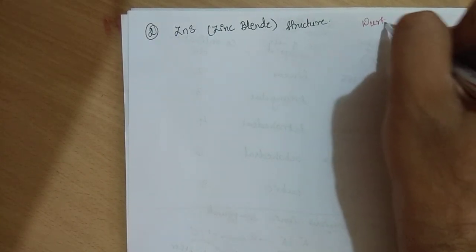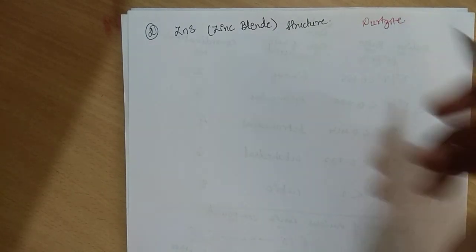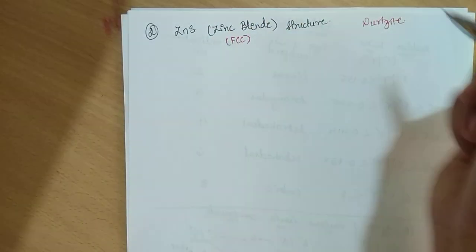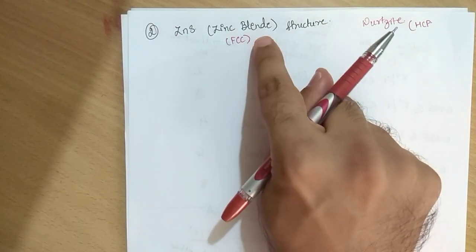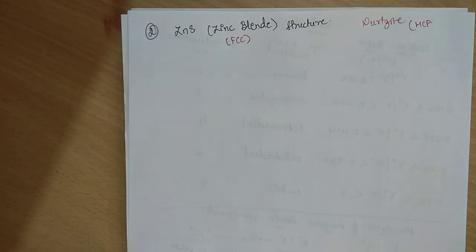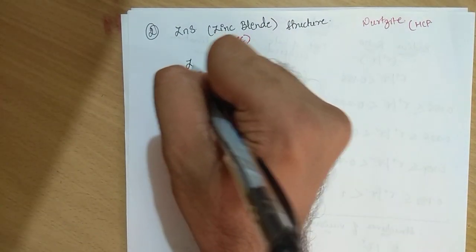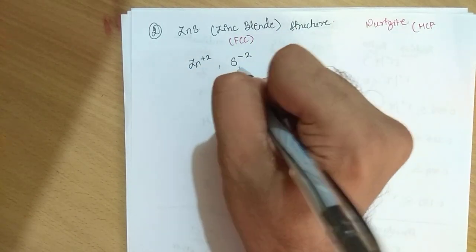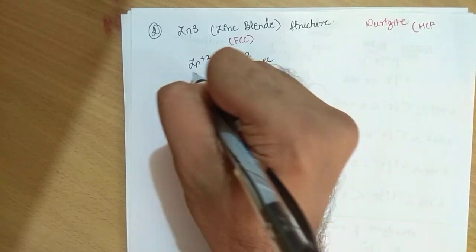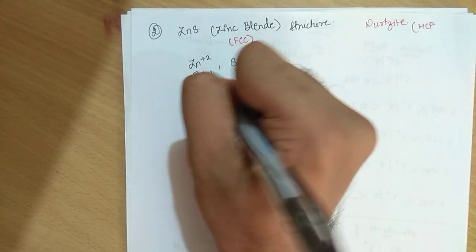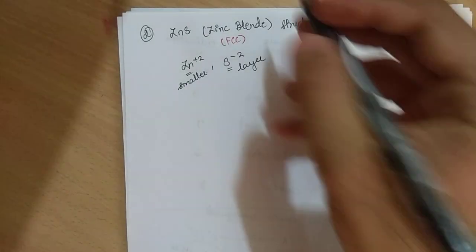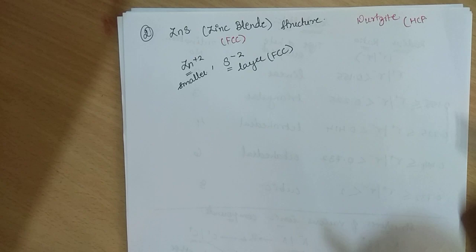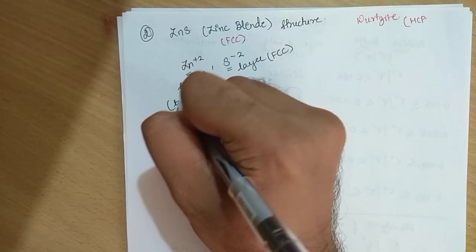Now we will look at the zinc blende structure (ZnS). ZnS has two structures: zinc blende structure and wurtzite structure. The zinc blende structure is FCC type, and the wurtzite structure is HCP type. We will focus on the zinc blende structure. In zinc blende, the cation is Zn²⁺ and the anion is S²⁻. S²⁻ is the larger ion and Zn²⁺ is the smaller one. The larger ion S²⁻ forms the FCC structure, and the smaller ions occupy tetrahedral holes.